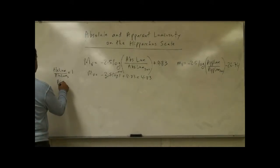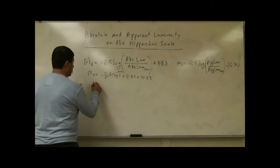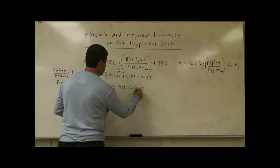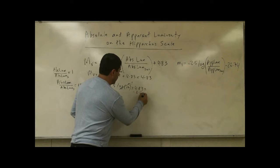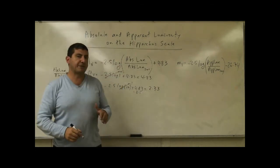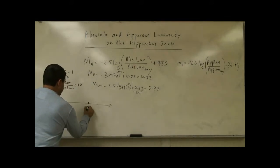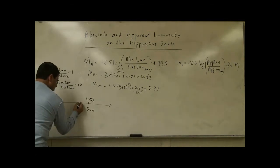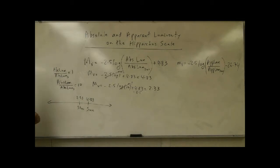If the absolute luminosity over the absolute luminosity of the sun is 10 — meaning a star 10 times brighter — then MV equals negative 2.5 times log of 10 plus 4.83. Log of 10 is 1, so it's 4.83 minus 2.5, which equals 2.33. On the Hipparchus scale, the more to the left you go, the brighter the star. So a star at 2.33 is 10 times brighter than the sun.